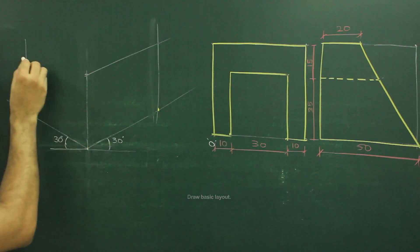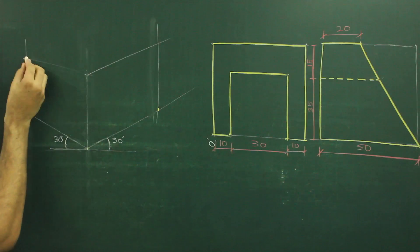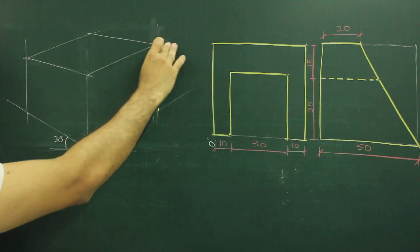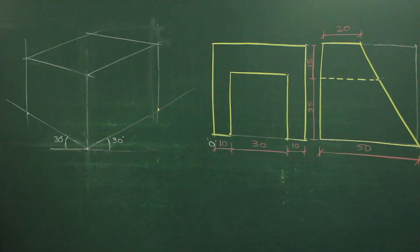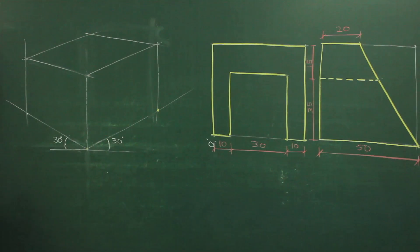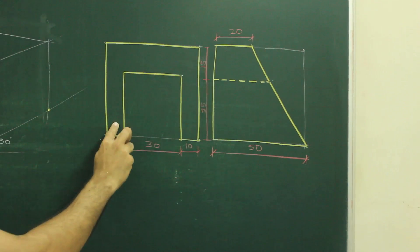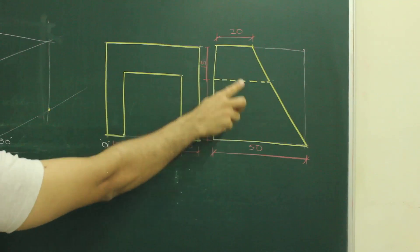First we will draw a box. After drawing this, if you observe both the views, in both the views see this part, it is one unit. See inside view, it is one unit.